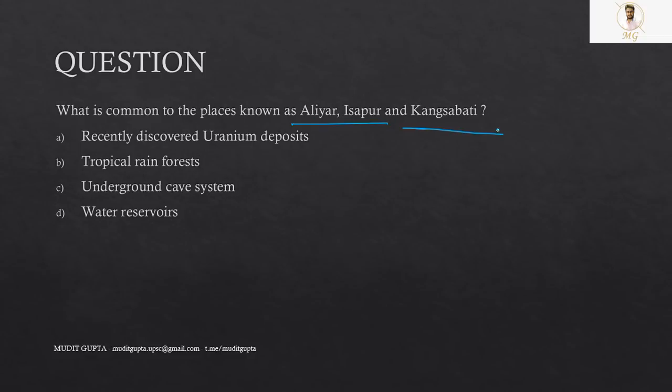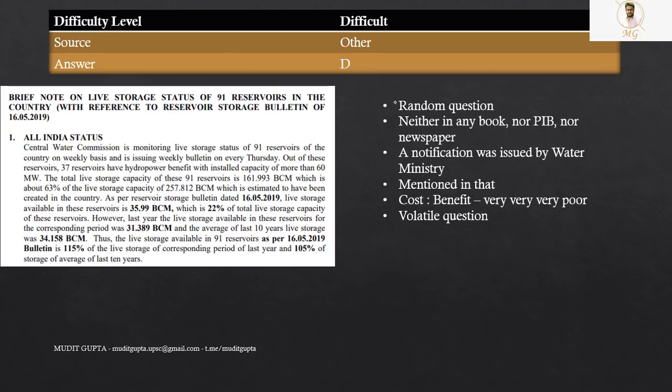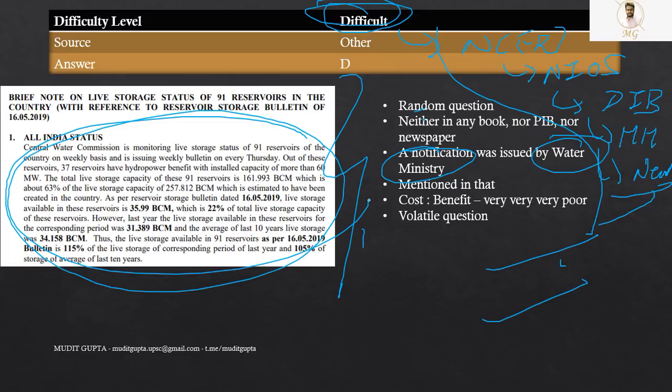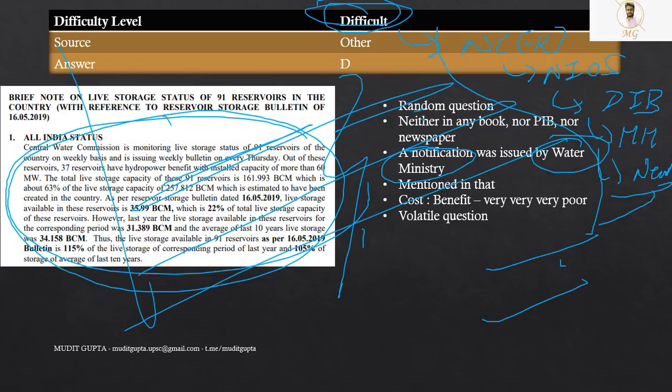Another question related to Aliyaar, Izapur and Kangasabati. As far as this question is concerned, it is extremely difficult question because this particular question is based upon current affairs. It was neither there in NCERT, nor there in news, nor there in PIB, nor there in Majid Hussain, nor there in any newspaper. It was not mentioned anywhere. There was this report by the Ministry of Water Affairs, a report in the Ministry of Water Ministry. In that, their name was mentioned. This is the screenshot. So they are related to water reservoir. Again, you cannot really solve such questions. Because every day, there are some notifications. Hundreds of notifications are there every day. So it is virtually impossible to cover such notifications that are not mentioned anywhere in news. So again, it's best to leave such kind of questions.